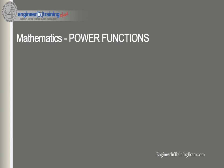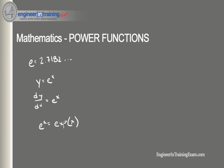One particular base is of singular importance in mathematics: the transcendental number e, equal to approximately 2.7182 and continuing. This base appears naturally in calculus because the power of the base equals its own derivative — in other words, the derivative of e to the x, dy/dx, is also equal to e to the x. The function e to the x is called the exponential function and is sometimes abbreviated as exp, such that e sub x equals exp(x).